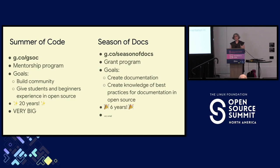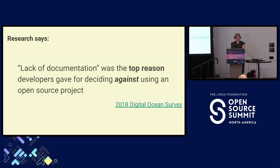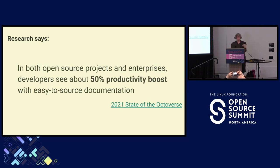Everyone in this room knows that docs are important, but even people who believe that documentation is important are often surprised by just how important it is. In the 2019 Tidelift survey, 72% of the developers surveyed said that documentation is a key decision factor when choosing open source. In the Digital Ocean survey, lack of documentation was the top reason developers gave for deciding against using an open source project. In the State of the Octoverse, developers see about a 50% productivity boost if documentation is easy to find.